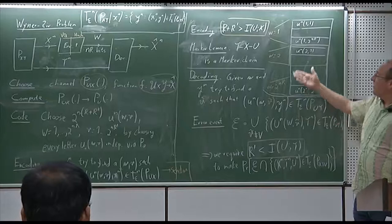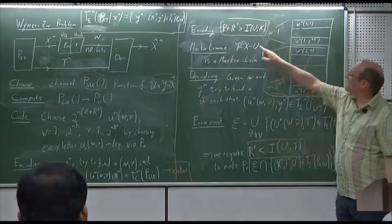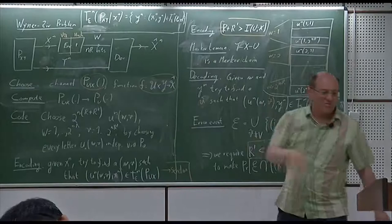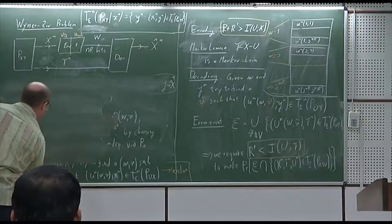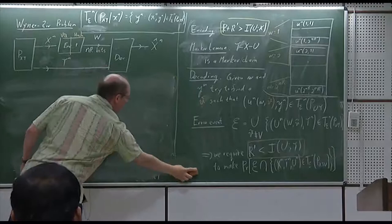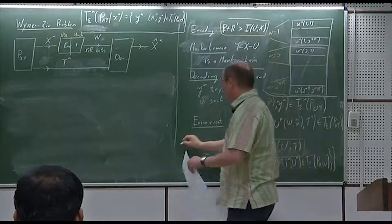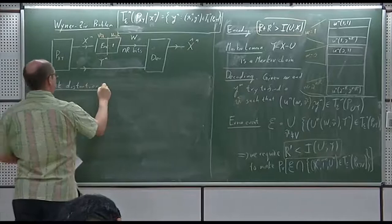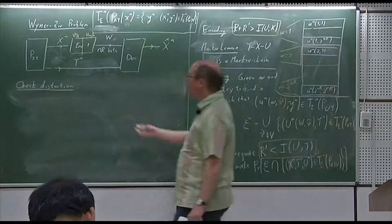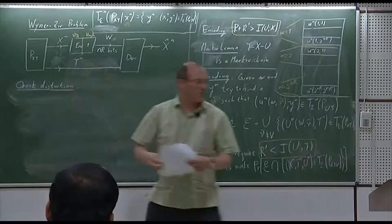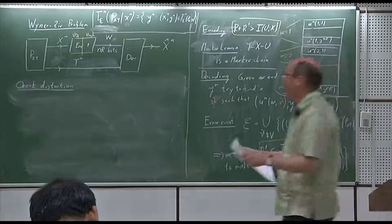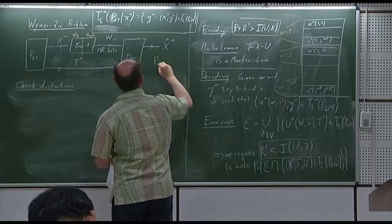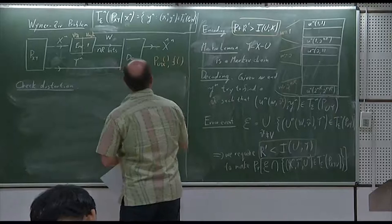Now we have to put these two together and do Fourier-Motzkin elimination — it's easy. R' is bigger than something, R is greater than this minus R', but R' is less than that. So here it's particularly straightforward. We get that the following rate is achievable. And I should also measure the distortion yet.